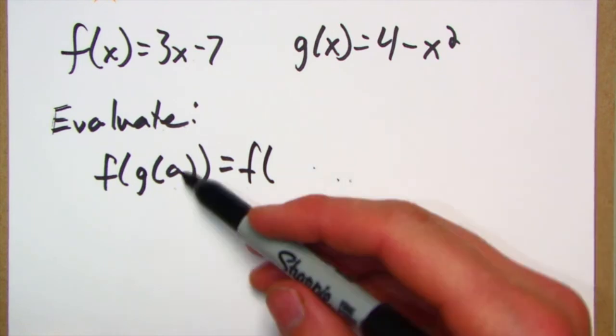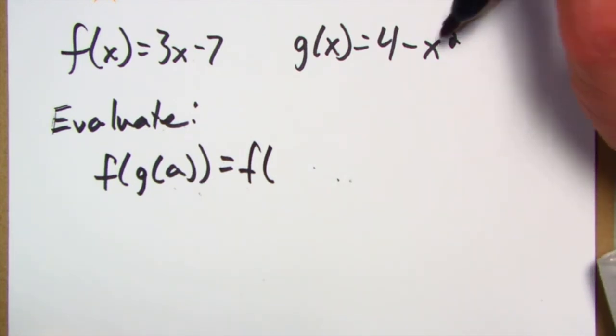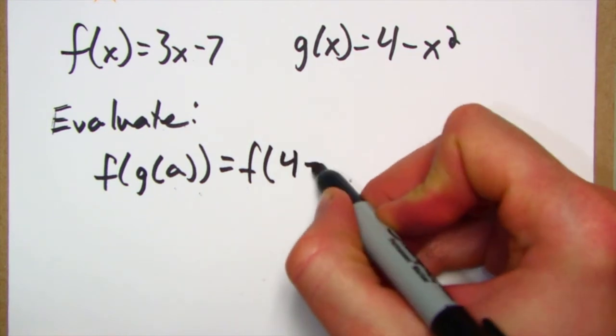Okay, here we go. f of g of a is going to be, first of all, f of whatever g of a is. Well, how do I find g of a? I'm going to put an a right in here for the x, so that's 4 minus a squared.